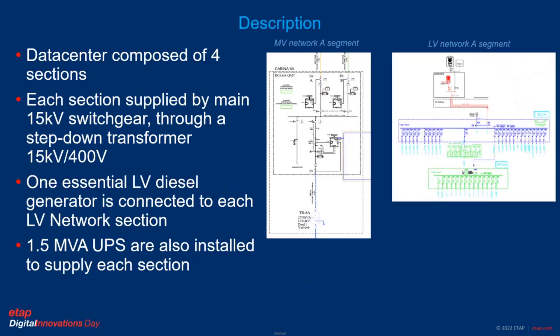The data center I am describing is composed of four main sections. Each section is supplied by a main 15 kV switchgear, which supplies an LV switchboard through a step-down transformer. We have one essential LV generator connected to each LV section, and we also have inside the architecture some UPS, which will determine some particular operating configurations and operating modes.